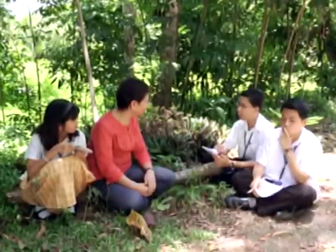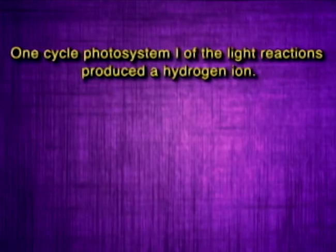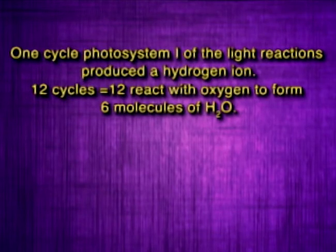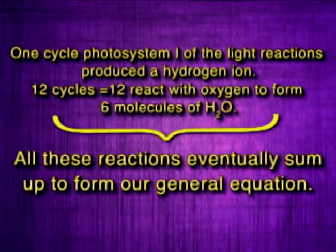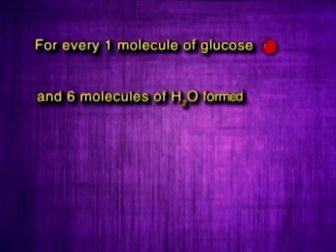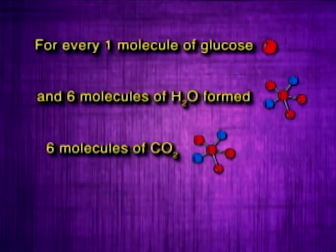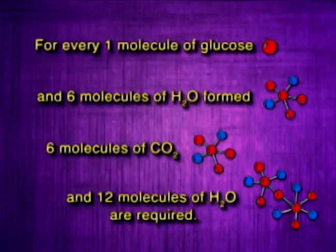In our general equation, there are six water molecules in the product. Where does this come from? Remember that one cycle in photosystem-1 of the light reactions produced a hydrogen ion. In 12 cycles, 12 of these react with oxygen to form six molecules of water. Notice that all these reactions eventually sum up to form our general equation. For every one molecule of glucose and six molecules of water formed, six molecules of carbon dioxide and 12 molecules of water are required.